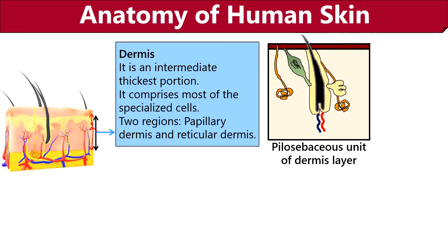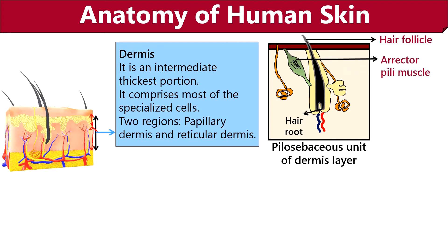Let us look at the components of the pilosebaceous unit in the dermis layer. The hair follicle originates from the follicular base or hair bulb, where cells actively divide to form a hair shaft, and the capillary network at the base provides blood supply. The erector pili muscle contains smooth muscle fibers attached to the follicular bulge — when it contracts, we experience goosebumps. The sebaceous gland is an exocrine gland that secretes oil into the skin, functioning as a lubricating gland, and it is absent in the palm and sole of the feet.